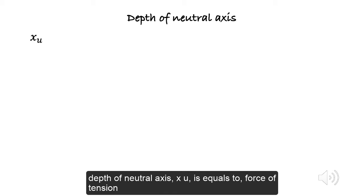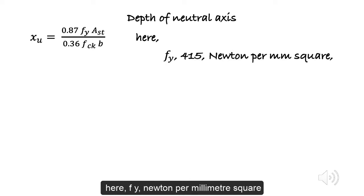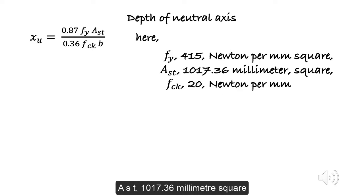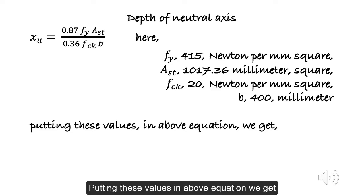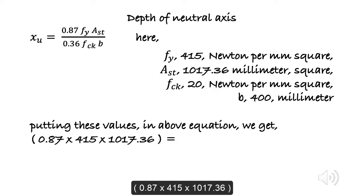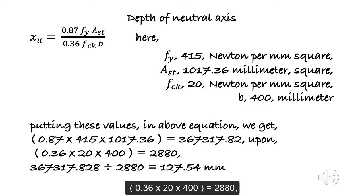Depth of neutral axis XU is equals to force of tension T divided by 0.36 FCK B. Here, FY 415 N per millimeter square, AST 1017.36 millimeter square, FCK 20 N per millimeter square, B 400 millimeter. Putting these values in above equation we get 0.87 by 415 by 1017.36 equals 367,317.82 upon 0.36 by 20 by 400 equals 2,880. 367,317.828 divided by 2,880 equals 127.54.